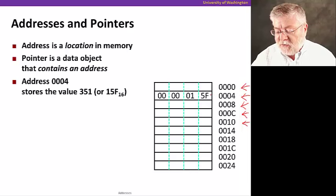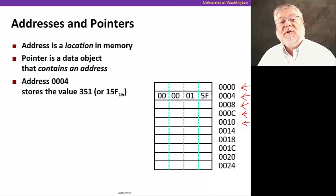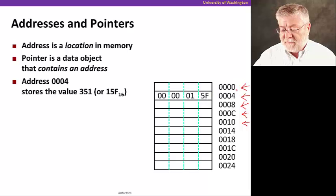In this particular case, I've shown you the detail of one word that happens to have the value 00 00 01 5F in hexadecimal. That corresponds to the decimal number 351. Now, an address is a location in memory, as we've said. So we have these different addresses here from zero zero hex down to two four hex, for all these various locations in memory.